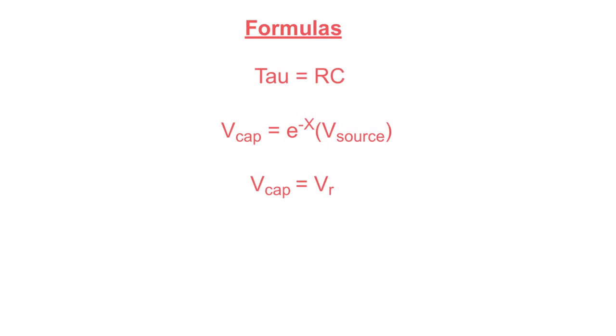Then we get to our voltage of the capacitor. It's actually easier than before. This time we're not using 1 minus because it's the inverse. We're seeing it drop. So it's E to the negative x times V source equals the voltage of the capacitor. And then for our voltage of the resistor, because it's just a simple circuit where the capacitor is your source voltage and the resistor is the only resistance in the circuit, your voltage at the capacitor is equal to your voltage of the resistor. So as it drops across the capacitor, it's the same drop across the resistor.